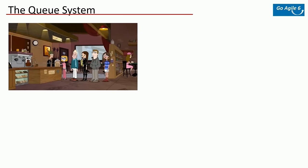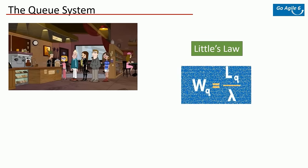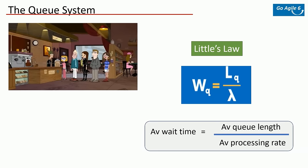In IT projects you try to reduce wait times. Professor John Little developed a formula to measure average wait time: you take the average queue length and divide it by average processing time. Generally, just keep in mind that longer queues lead to longer wait times — it's called Little's Law, and it deals with long queues, which makes it easy to remember.